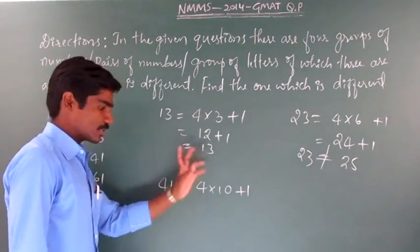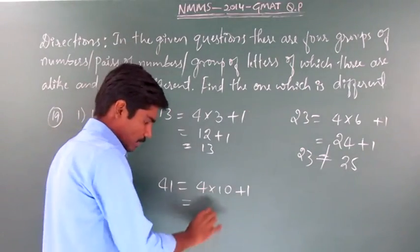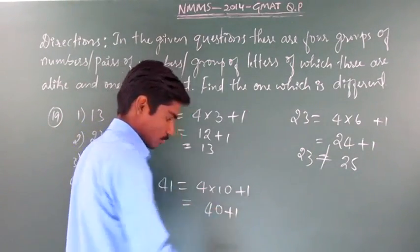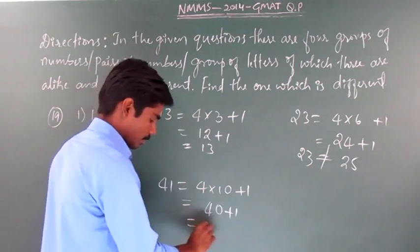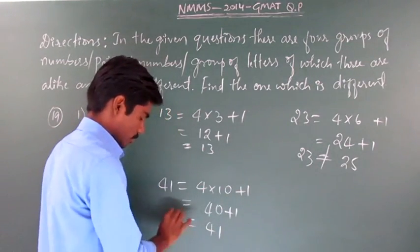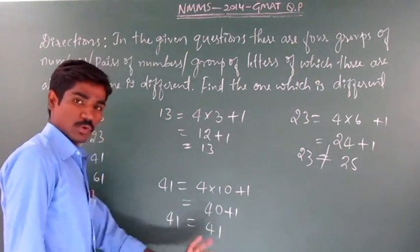Now, does it satisfy here? 4 into 10 is 40 plus 1. Ultimately, see, I am getting the right answer. 41 is equal to what we got.